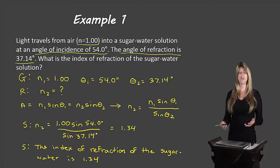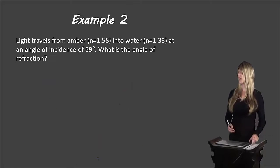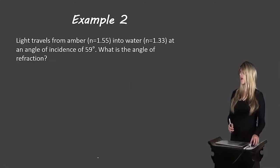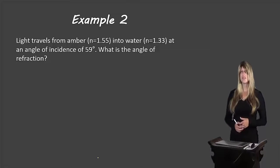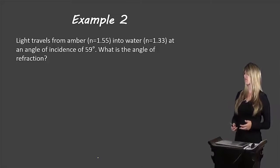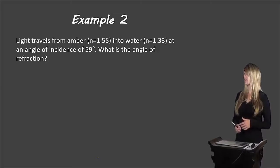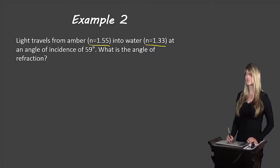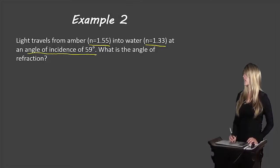Let's take a look at another type of example. Light travels from amber, which has an index of refraction of 1.55, into water, which has an index of refraction of 1.33, at an angle of incidence of 59 degrees. What is the angle of refraction?